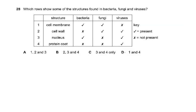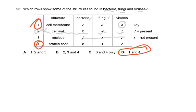Question number 28: which row shows structures found in bacteria, fungi, and viruses? A cell wall is present in bacteria and fungi, but viruses do not have a cell wall. Bacteria do not have a nucleus. Viruses do have a protein coat. So options one and four are correct, and that is why D is correct.